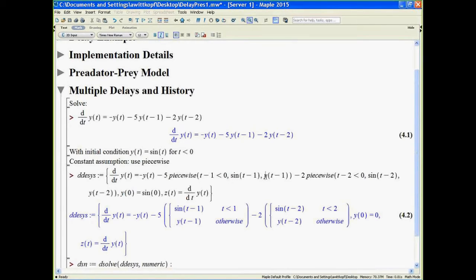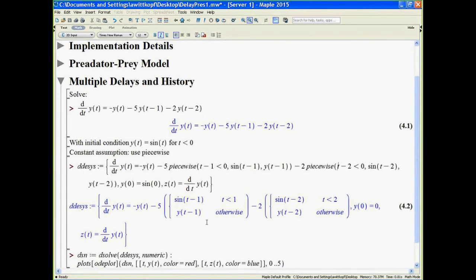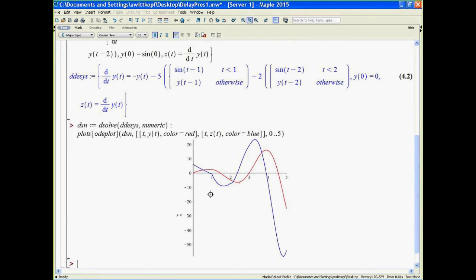So we see that for the t-1 delay term, when t-1 is less than zero, we specify the variable initial condition we want. Otherwise we use the delay. And we apply a similar method to handle the two-second delay. Solving this system shows us something we were mentioning earlier, kinks. The solution has a kink at t equals 1, and a visible kink as well at t equals 2.